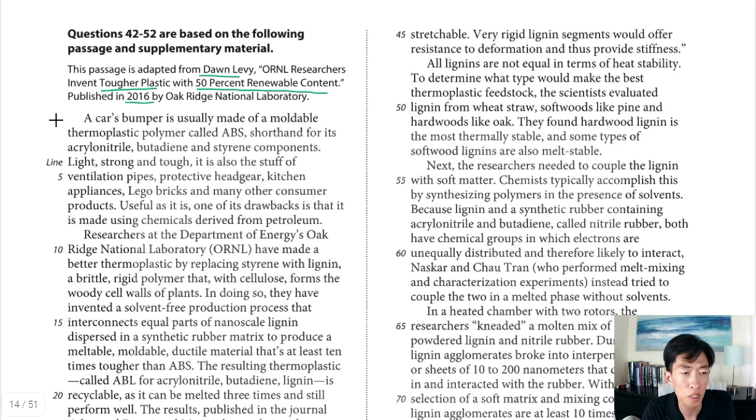All right, so let's read the first paragraph. It says a car's bumper is usually made of moldable thermoplastic polymer called ABS, shorthand for blah blah blah, and then they talk about where it's used. One point they do make is in line seven, useful as it is, one of its drawbacks is that it is made using chemicals derived from petroleum. So I guess that's bad.